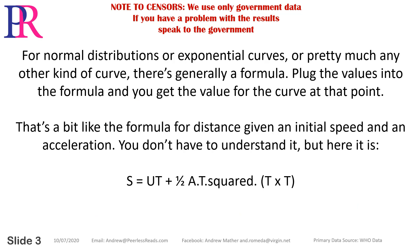For normal distributions, exponential curves, or pretty much any other kind of curve, there's generally a formula. Plug the values into the formula and you get the value for the curve at that point. That's a bit like the formula for distance given an initial speed and an acceleration — s equals ut plus a half at squared.